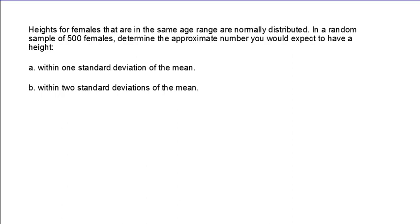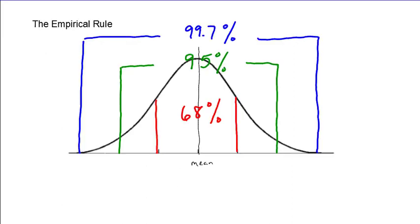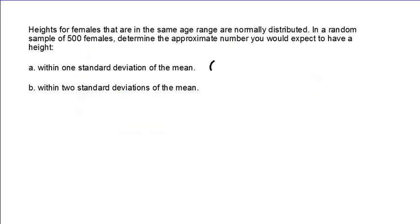So according to the empirical rule which we just saw on the previous page, 68% of data values fall within one standard deviation of the mean. So 68% is 0.68 and so that means 68% of the 500 data values that I have are going to be, I would expect, within one standard deviation of the mean. And so that means that 340 women would have a height within one standard deviation of the mean.